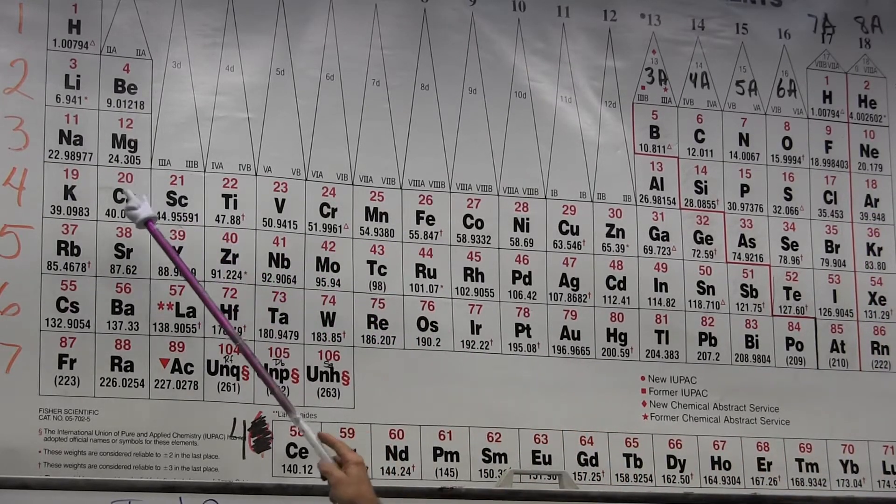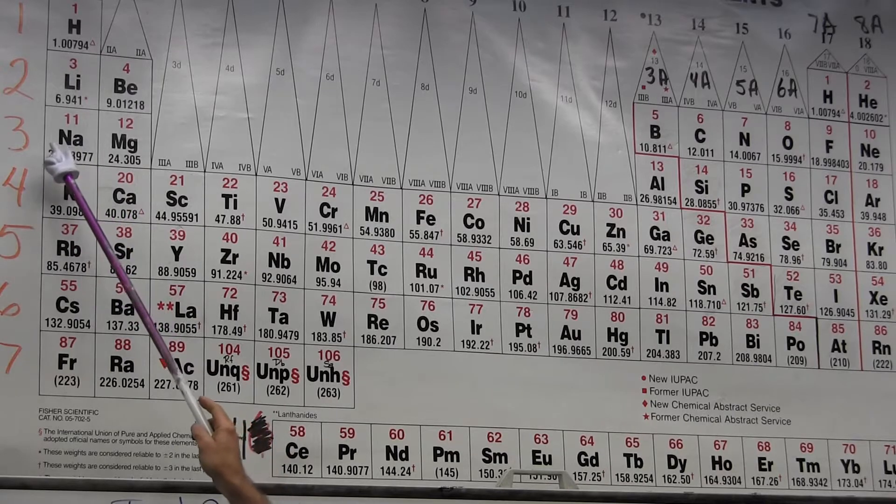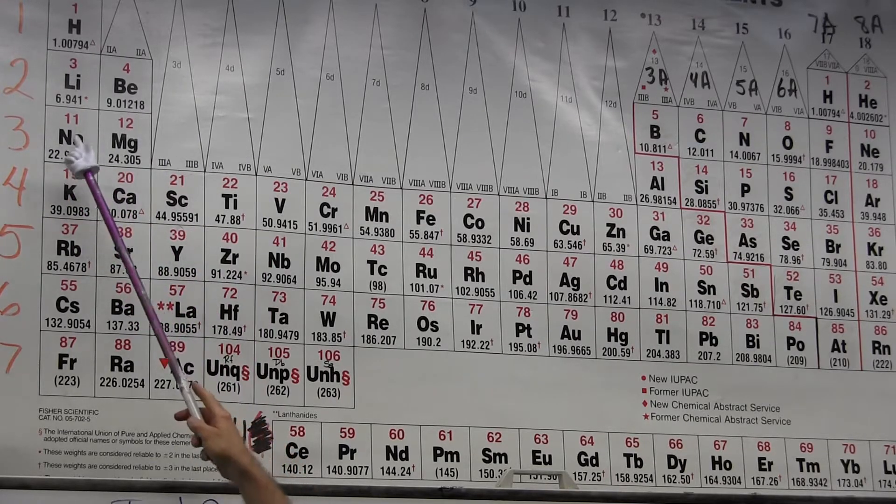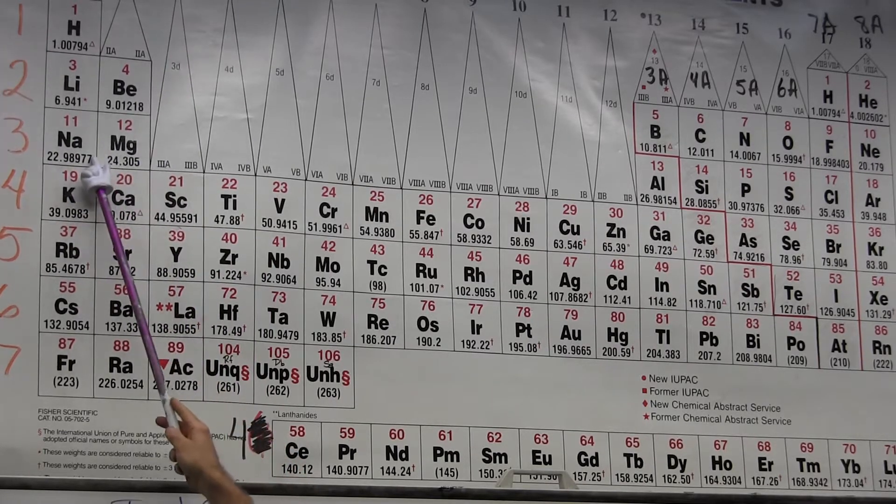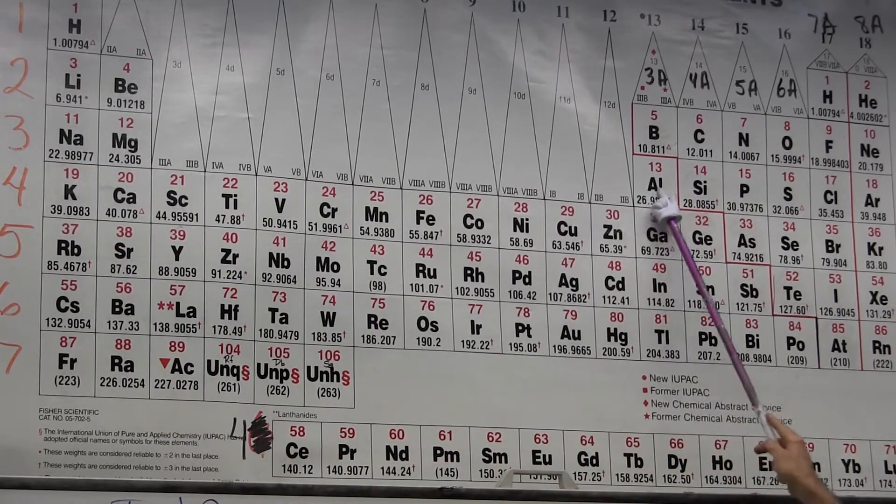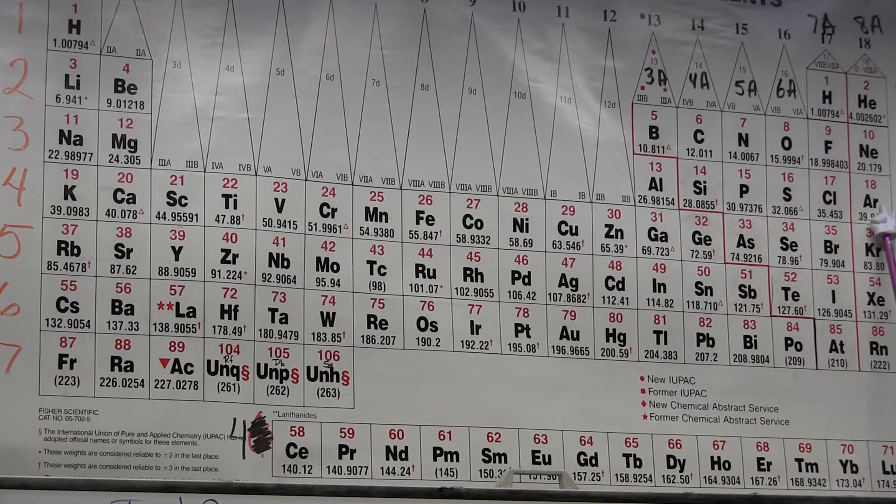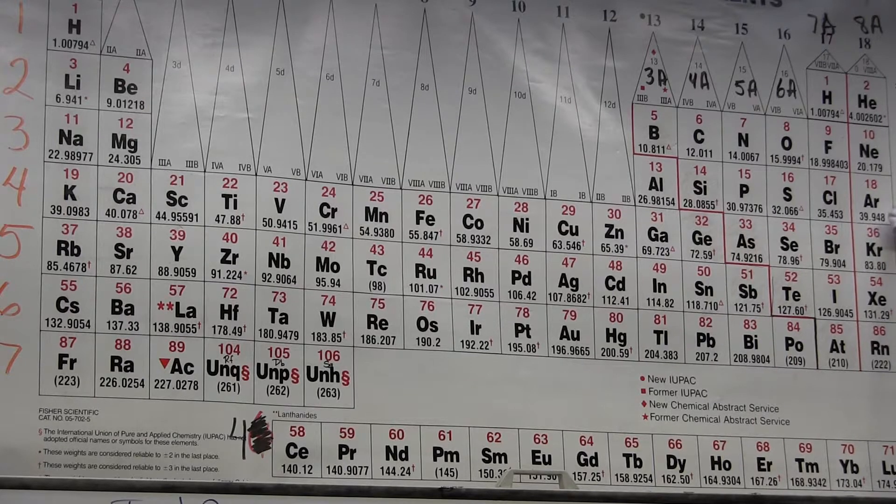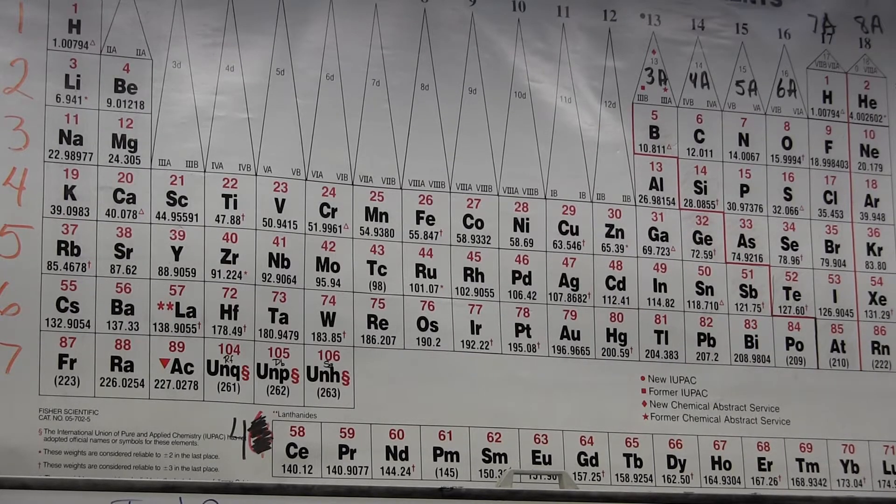When I go through n equals three, I'm going to have the s-electrons first, so the s-subshell filled, and then I'm going to fill the p subshell.